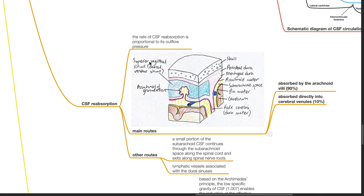CSF reabsorption. The rate of CSF reabsorption is proportional to its outflow pressure. Main routes: 90% of CSF is absorbed by the arachnoid villi. 10% is absorbed directly into the cerebral venules.